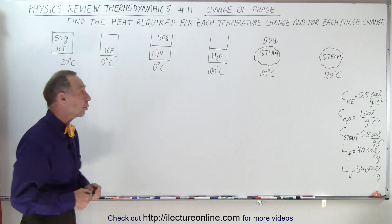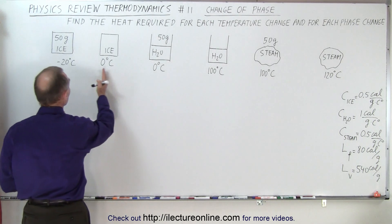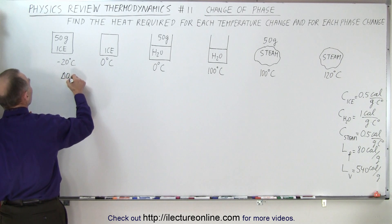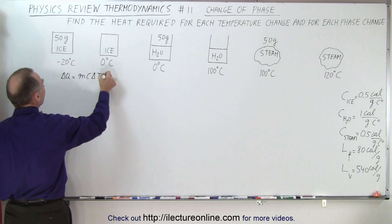The two equations you're going to need, when there's just a change in temperature, then you can say that the amount of heat changed, delta Q, is equal to M C delta T.